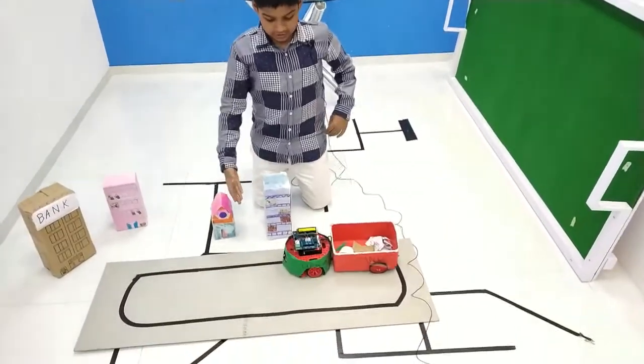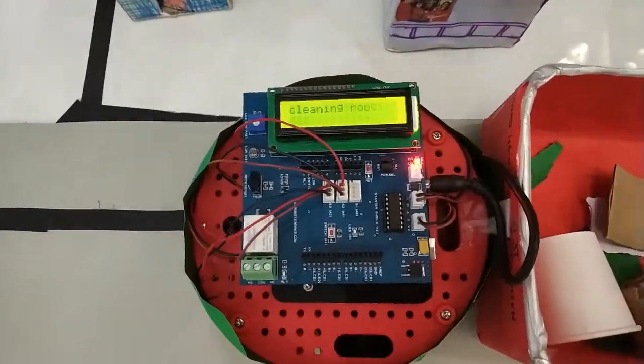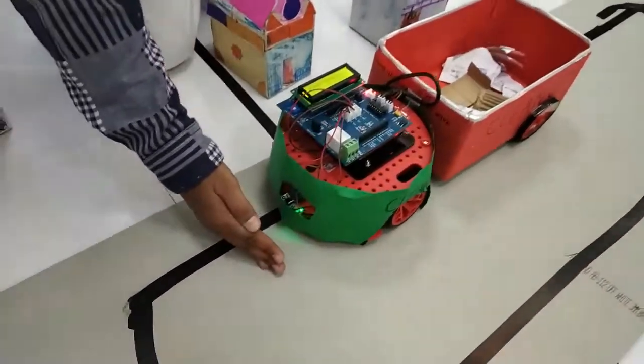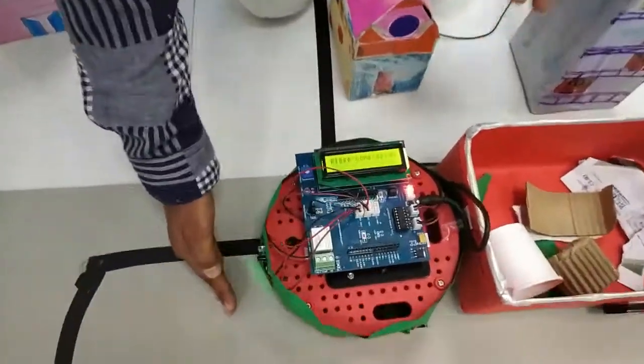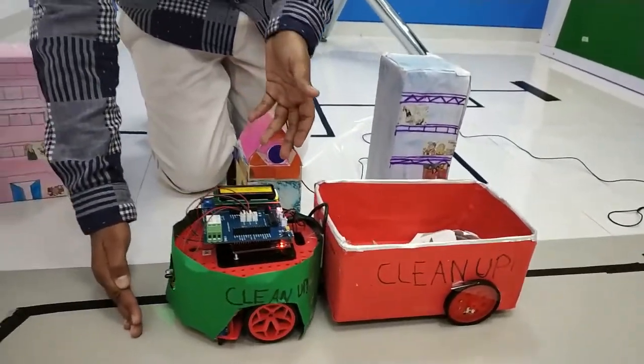This is how it works. Now it is following the line and it is also displaying cleaning robot. If a person comes in front of it, it will display please come aside as it has collected all the waste from the buildings and now it is going to a particular area and dumping it.